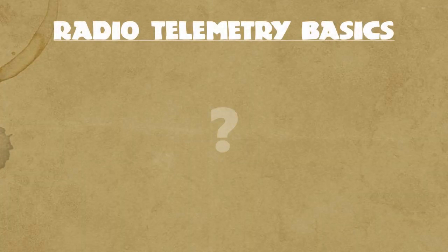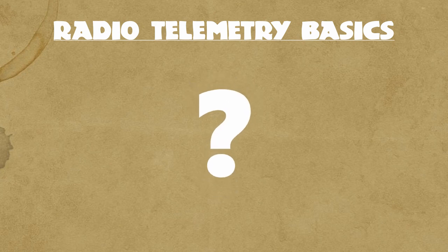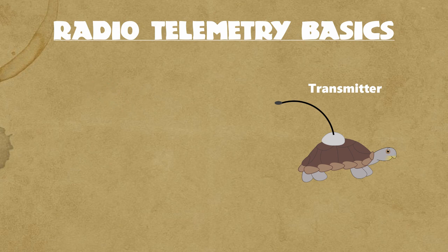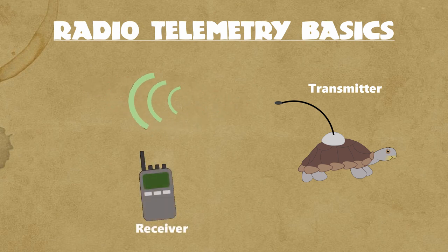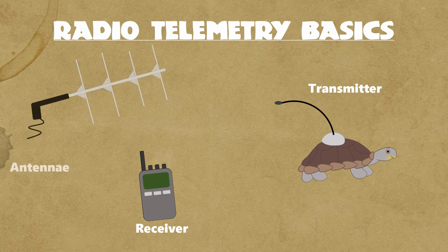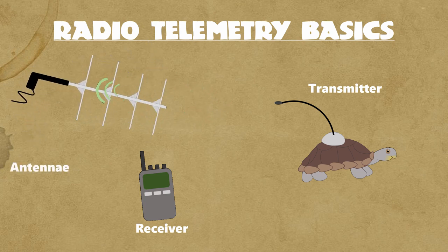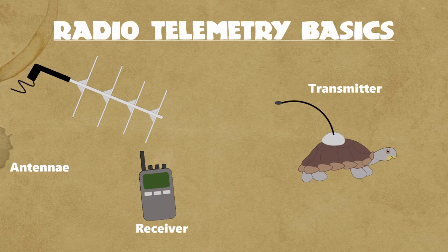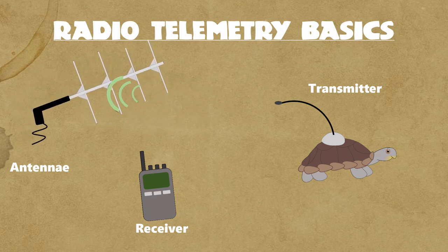So what is radiotelemetry? Essentially, telemetry works by utilizing three basic components. The transmitter, which is attached to the animal, sends out radio signals at a very specific frequency. The receiver, which allows you to dial into the frequency sent out by the transmitter. And the antenna, which allows you to grab the transmitter signal from farther distances, as well as home in on the general direction of the transmitter's signal.